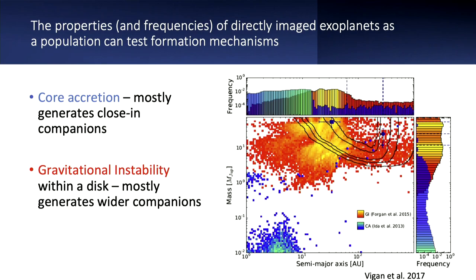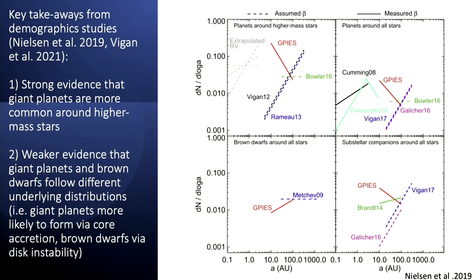Different planet formation theories place planets in very different parts of semi-major axis and mass space. Core accretion will place planets closer in and at lower masses; gravitational instability produces companions further out and more massive. We have very good sensitivity now to gravitational instability planets and find a handful that probably did form via gravitational instability, but the fact that we don't find many of them — even covering the peak of that distribution with GPI and SPHERE SHINE — suggests that formation mechanism is pretty rare. The strongest evidence is that giant planets are more common around higher-mass stars. The weaker conclusion is that giant planets and brown dwarfs seem to have different underlying distributions.